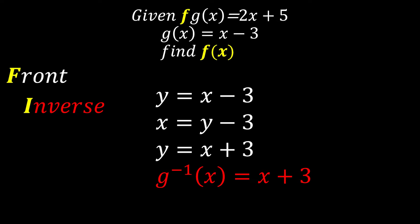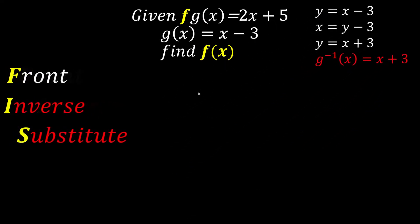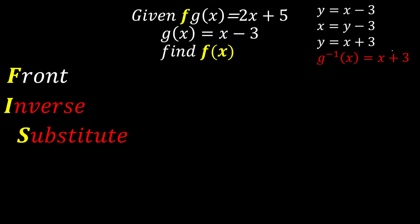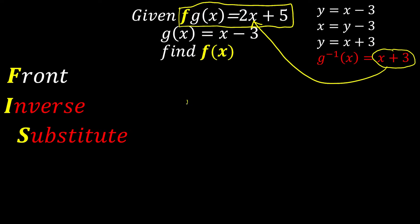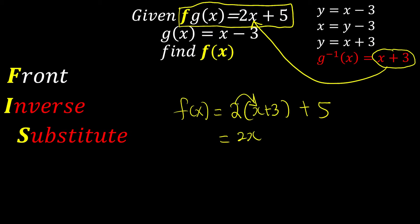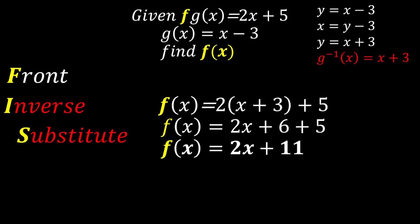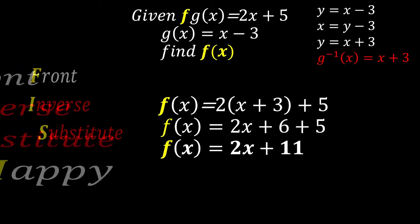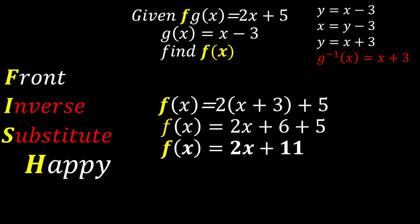The S in FISH means substitute. We substitute our answer from step two into the composite function. So in fg(x) = 2x plus 5, we replace x with our inverse result. We get f of (x plus 3) = 2(x plus 3) plus 5. Expanding: 2x plus 6 plus 5 gives f(x) = 2x plus 11. Steps one, two, and three are done — we have the answer!